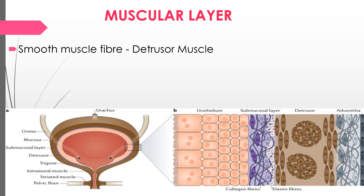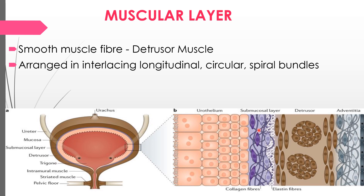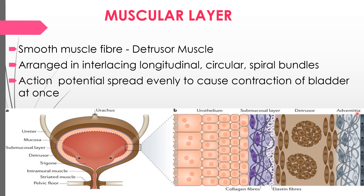The muscle layer is the detrusor muscle, which has a unique structure. It is arranged in interlacing longitudinal, circular, and spiral bundles. This arrangement helps the action potential to spread evenly, causing the entire bladder to contract at once.